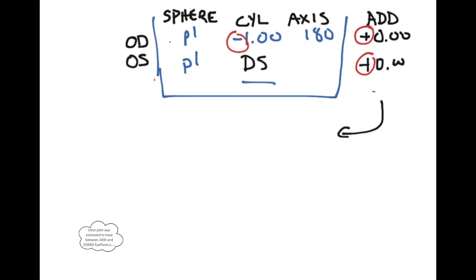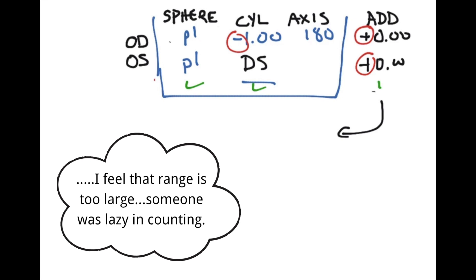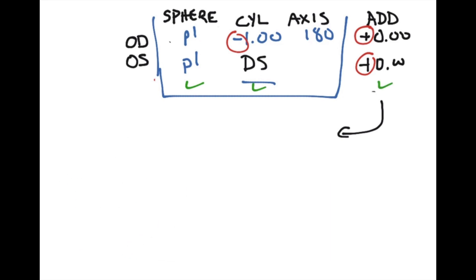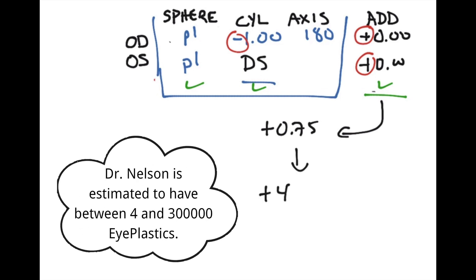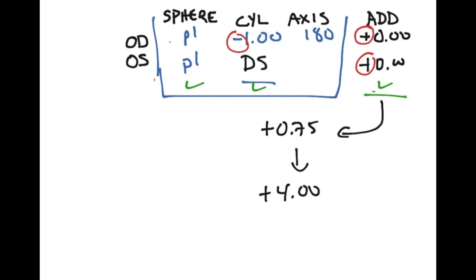There is a range in all the sphere and the cylinder and the ADD power that typically you will find. We'll start talking about the ADD power, but the range from the ADD power typically is going to range from plus 0.75 up to possibly plus 4.00. It can go higher, but very often you don't see it higher than plus 4.00. The most common stock ranges that you'll find these in will be between plus 0.75 and actually plus 2.50. Usually if you're going over plus 2.50 it's going to be a custom order type of lens.